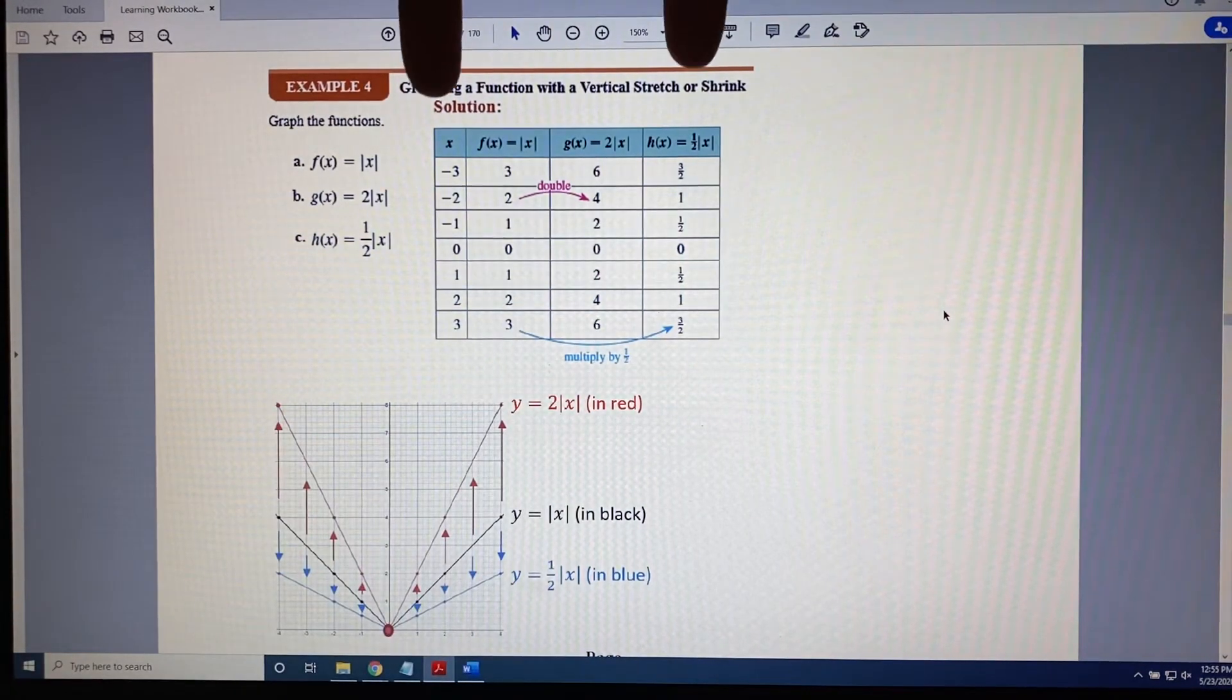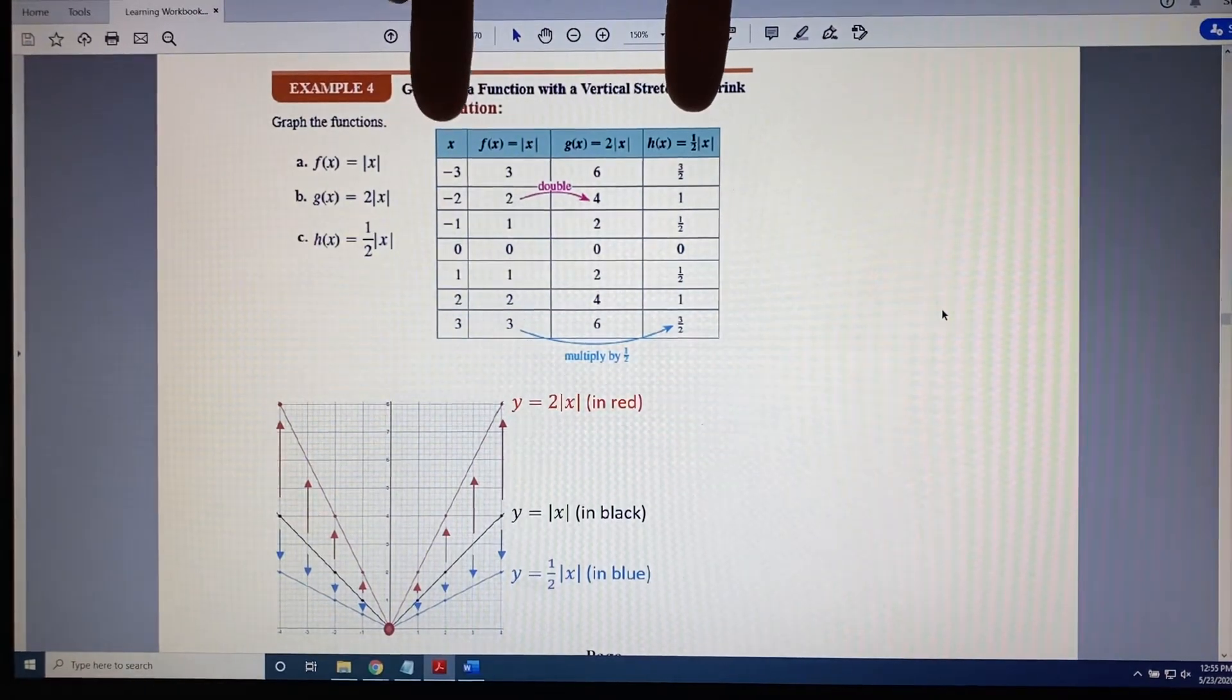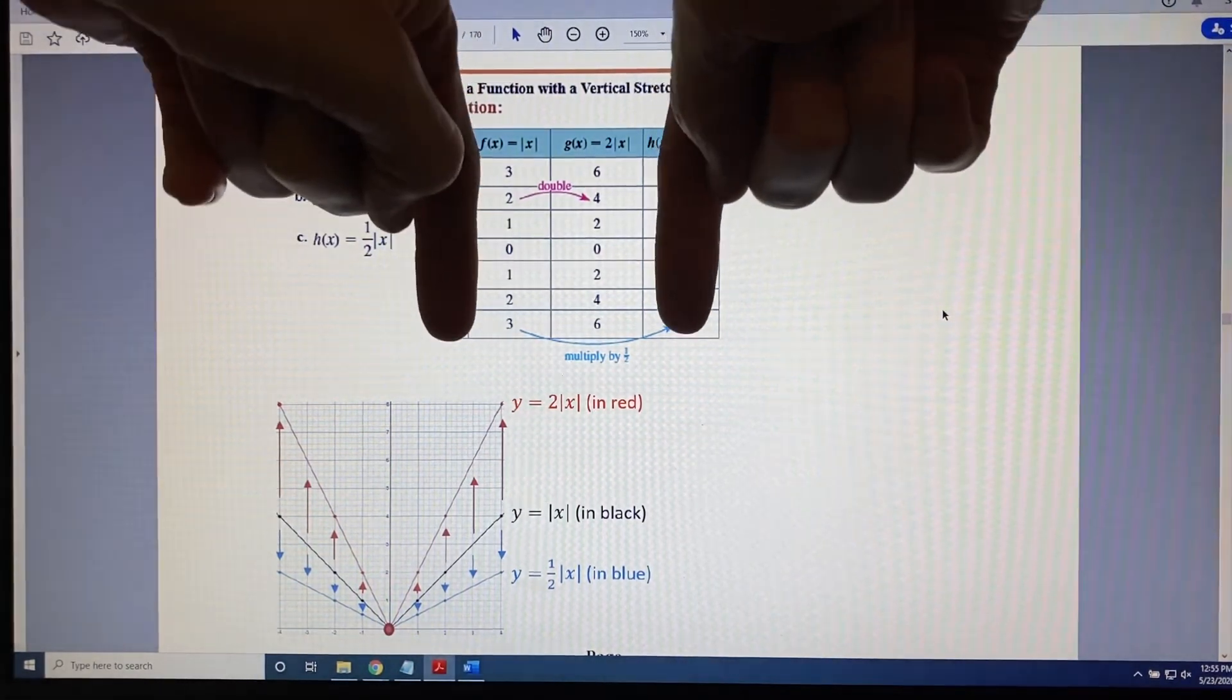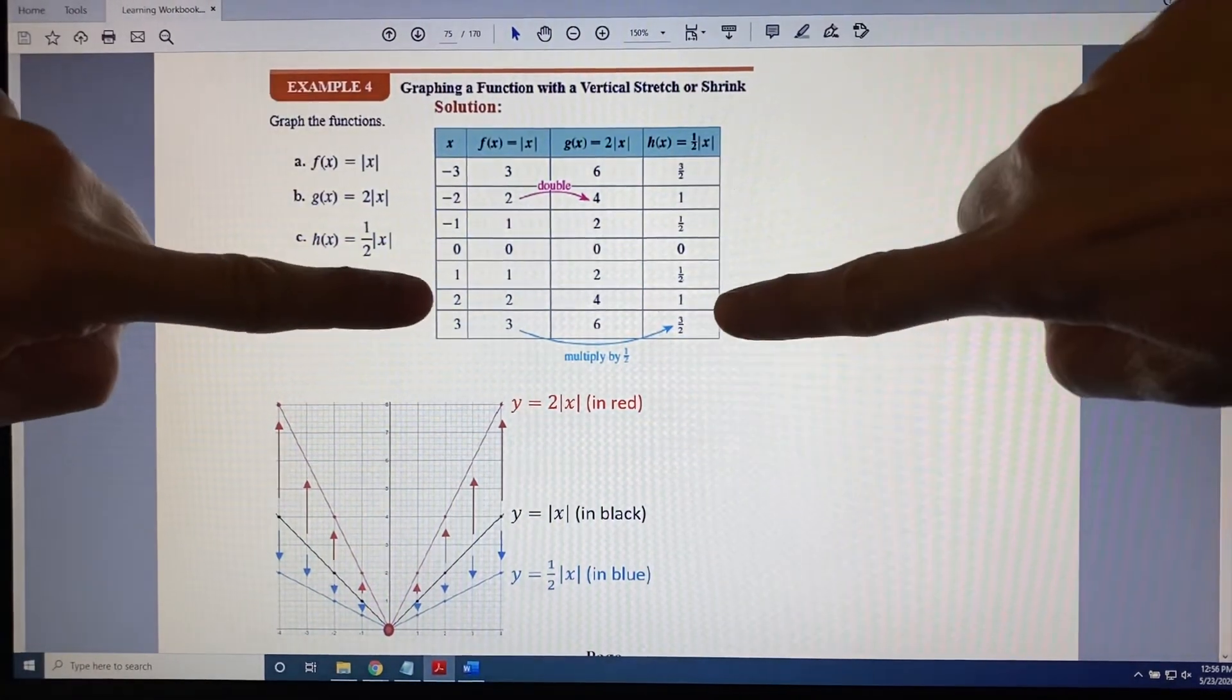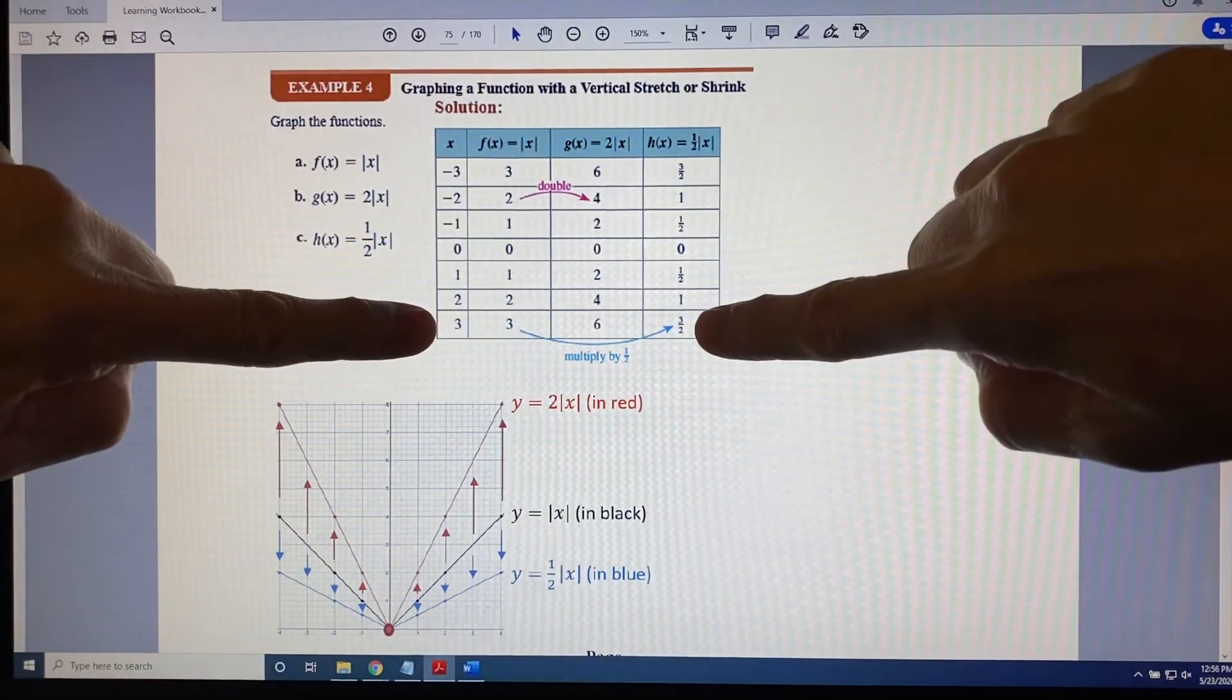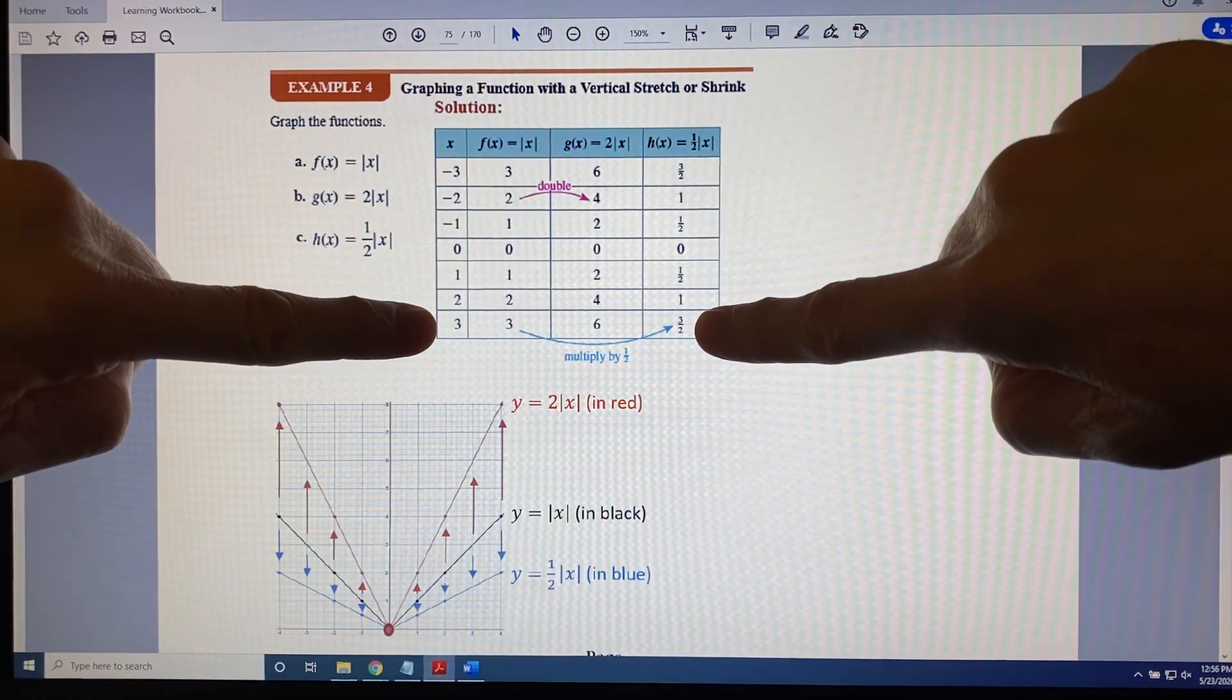So the columns of this particular table for the function h(x) would be the outside columns. This here is the x-coordinate, and this here is the y-coordinate. And we can use these columns, these points, to create the graph shown here in blue. For example, the blue graph contains the point (2, 1). That would be right there. It also contains (3, 1.5). Notice 3 halves is the same as 1 and a half, which is 1.5.